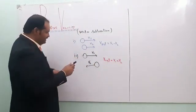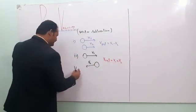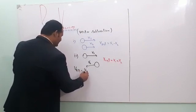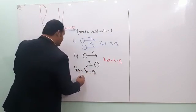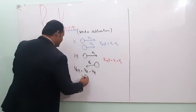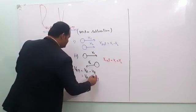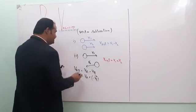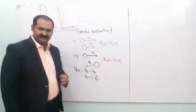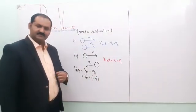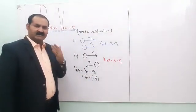When we say the velocity of body A with respect to B, we write it as V_A minus V_B, which can also be written as V_A plus (minus V_B). So relative velocity is indeed a special case of vector subtraction, and we can solve many questions with the help of this concept.